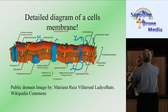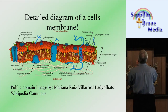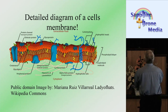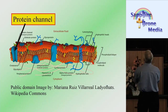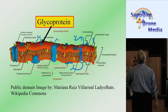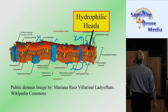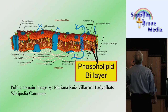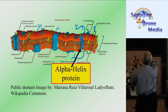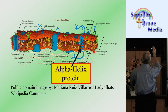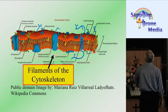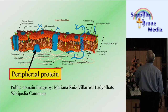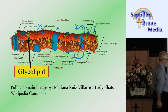Here's a detailed diagram of a cell's membrane. This is the cytoplasm — the outer portion of the cell. On one side is the cytoplasm, on the other is the extracellular fluid. You've got the protein channel, the globular protein, the glycoprotein, the carbohydrate, the hydrophilic heads, the hydrophilic tails, the phospholipid bilayer — there are two layers. You also have the alpha helix protein, the surface protein, filaments of the cytoskeleton, integral protein, peripheral protein, and the glycolipid. That's just the casing that holds it all together.